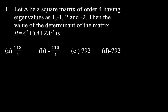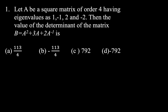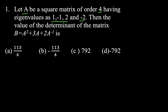The first question says: suppose we have a square matrix of order 4 whose eigenvalues are 1, -1, 2, and -2. Then find the value of the determinant of the matrix B given by A² + 3A + 2A⁻¹. We have four options and must choose the correct answer.